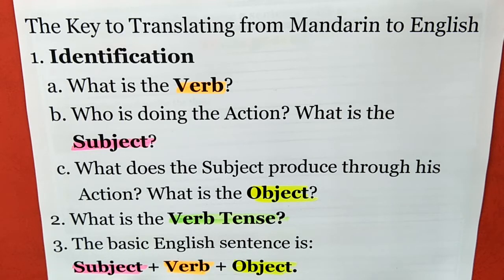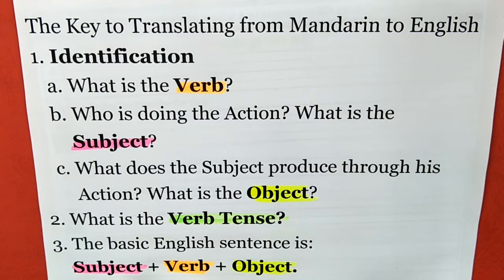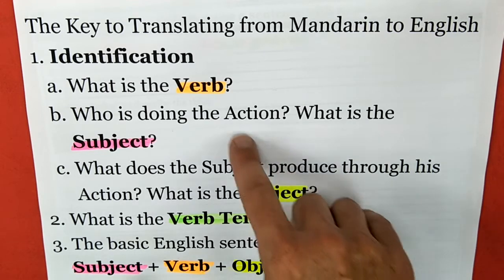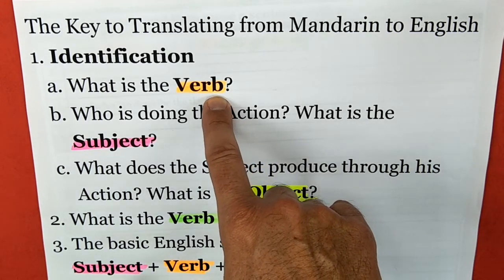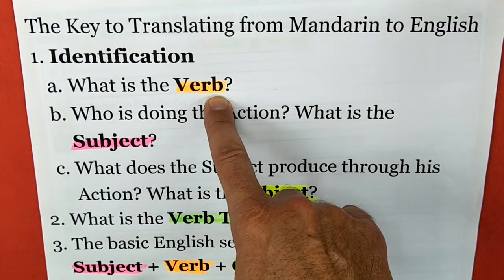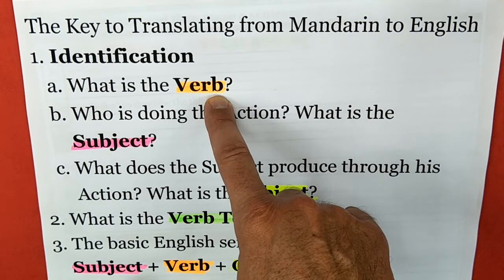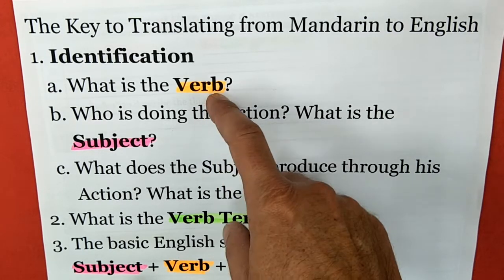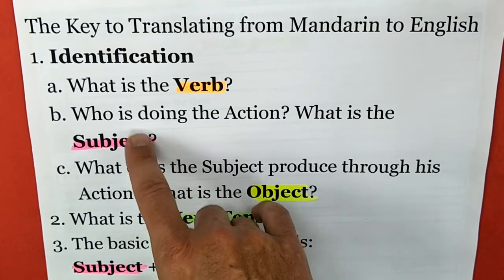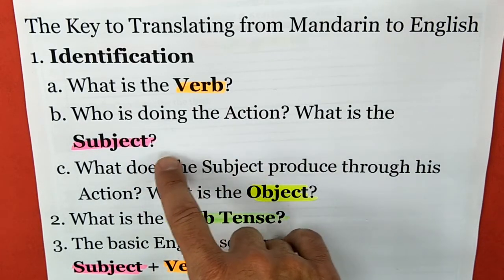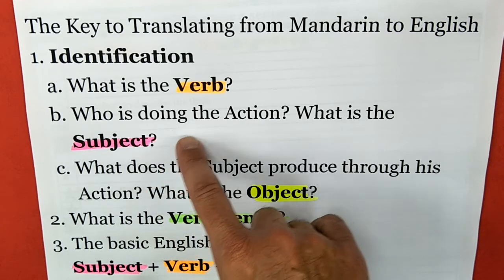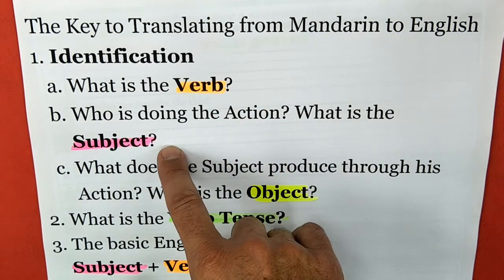The key to translating from Mandarin to English is very simple if you follow three steps. Number one: identification. First, find the verb. The English verb is the most important part of a sentence. Then find out who is doing the action — that's the subject. Find the verb and then you can find the subject.